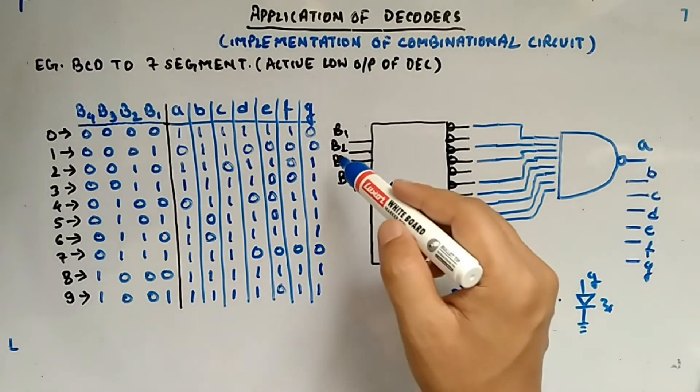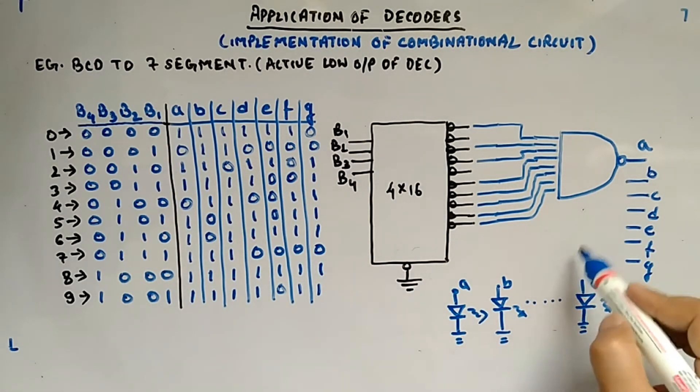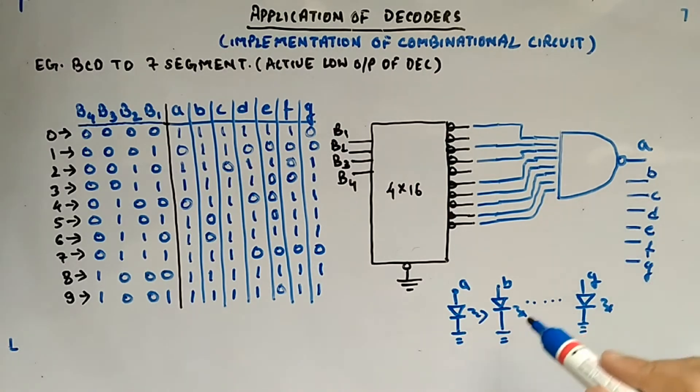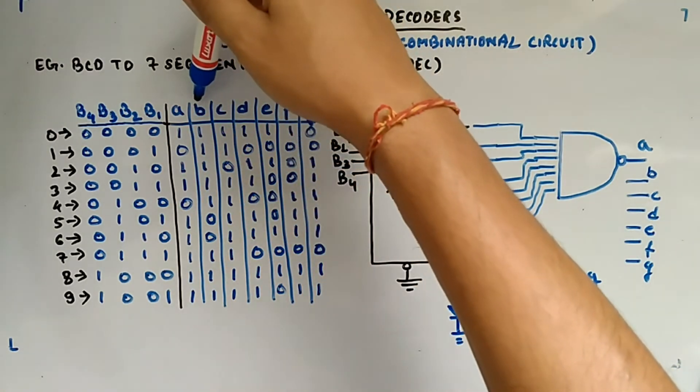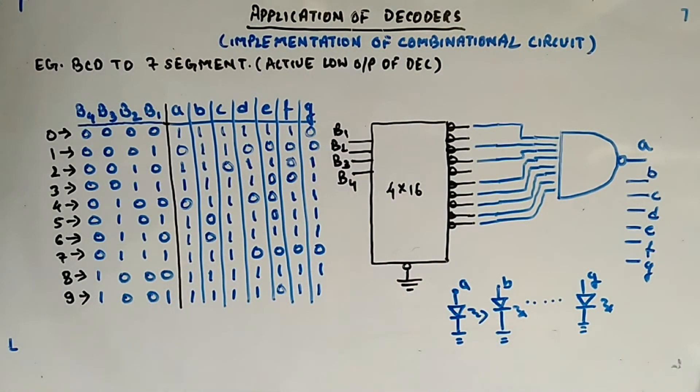So if you will apply 0, 0, 0, 0, you will get A equal to 1. Similarly you can have a circuit for B, a circuit for C, looking at this column, this column, this column and likewise you will have C.